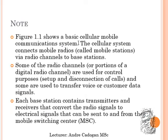Figure 1 shows this basic cellular mobile communication system. The cellular system connects mobile radios, or mobile stations, via radio channels to base stations. Some of the radio channels, or a portion of the digital channels, are used for control purposes — not only transmitting voice, but also handling setup and disconnection of calls, call waiting, and so on.